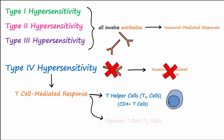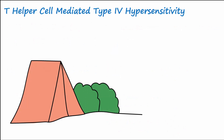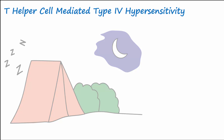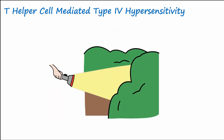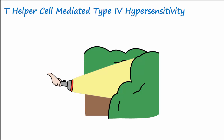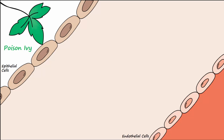This is because a type 4 hypersensitivity reaction involves T helper cells and/or cytotoxic T cells. To visualize the case of the T helper cells, let's assume you're out camping. It's nighttime, the campfire is out, and you're sleeping in your tent when you hear a strange rustling noise outside. You grab a flashlight, go out to investigate, and find a squirrel. Making your way back, you realize you've walked right into a patch of poison ivy.